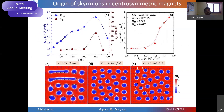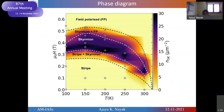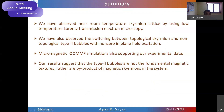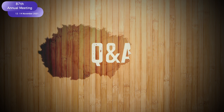Magnetic anisotropy is a key parameter to stabilize these skyrmion bubble structures in this material, and we can stabilize them over a very wide temperature range from 100 K to 300 K, which is very important for application purposes. To summarize: we observed near room temperature skyrmion bubbles using Lorentz TEM, demonstrated switching between topological skyrmions and non-topological type-2 bubbles, and micromagnetic simulations support our experimental data. Our results suggest that type-2 bubbles are not fundamental magnetic structures but rather a byproduct of the magnetic system.